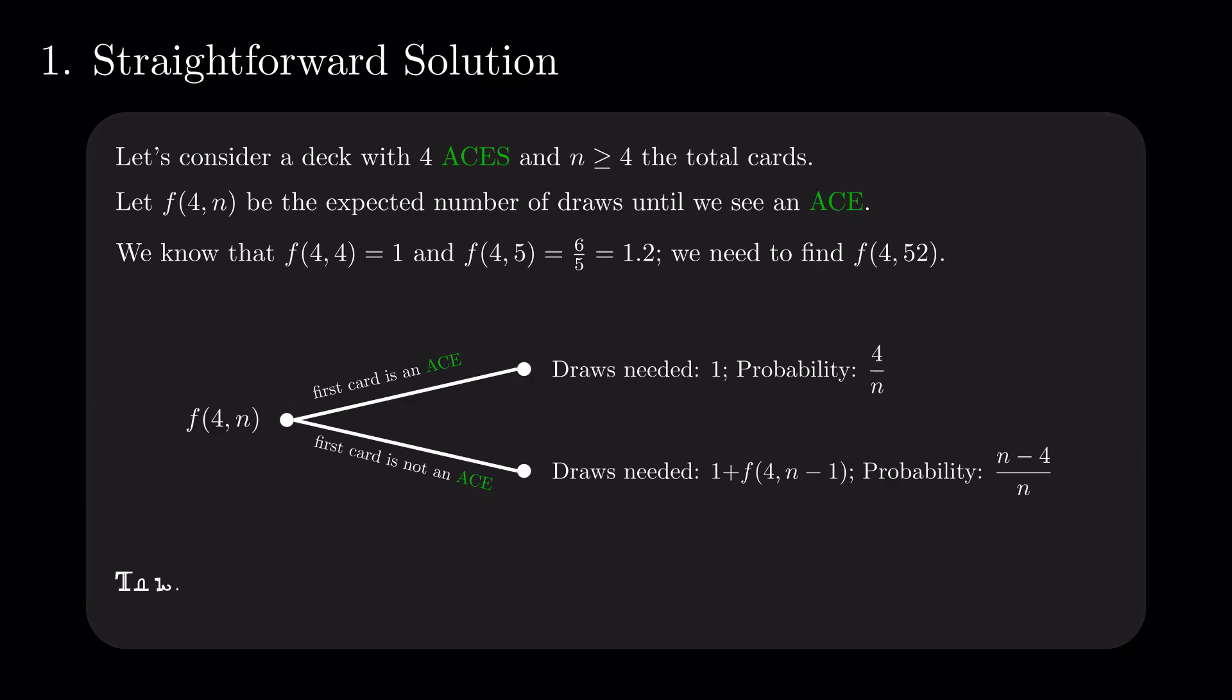We can average over the two branches, using the fact that the expectation is linear, and gather that f of 4 and n is 4 divided by n plus n minus 4 divided by n, times 1 plus f of 4 and n minus 1, for any n greater than or equal to 4.